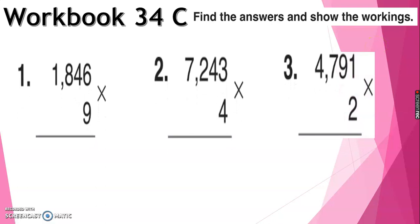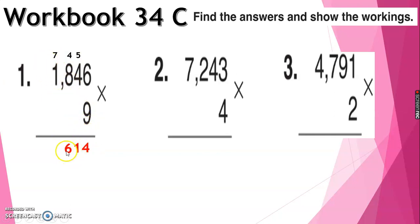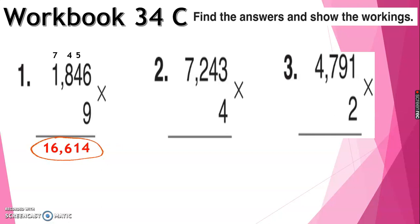We have numbers 1, 2, and 3. Number 1: 9 times 6 is 54 — write 4 and carry 5. 9 times 4 plus 5 is 41 — write 1 and carry 4. 8 times 9 is 72 — write 6 and carry 7. 9 times 1 is 9 plus 7. Therefore the answer to number 1 is 16,614.